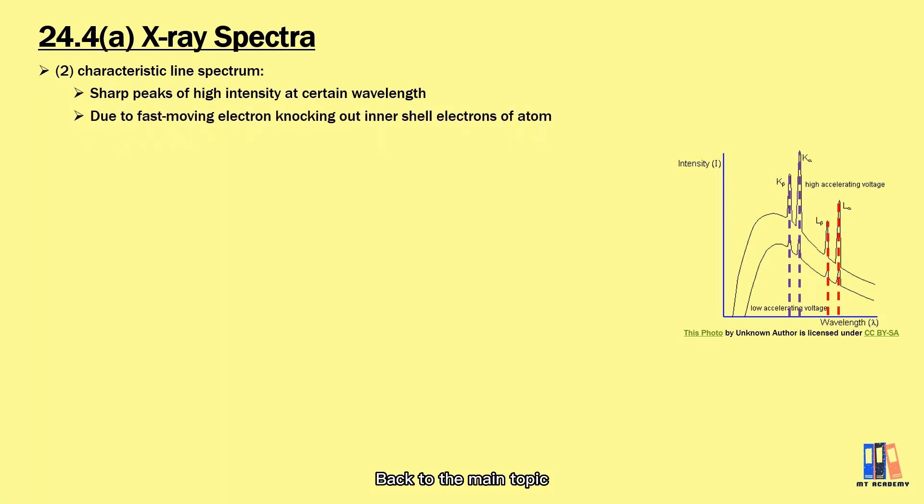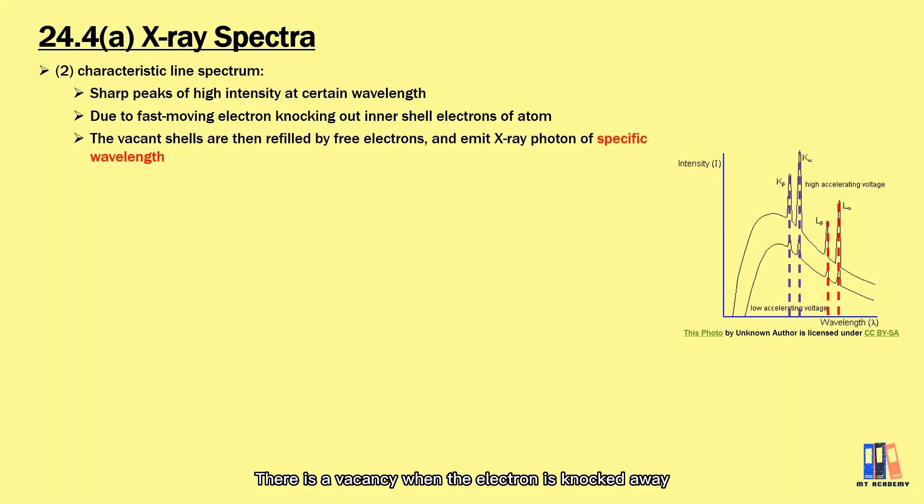Back to the main topic, this wavelength of X-ray is produced starting with the phenomenon where the fast-moving electron will knock out the electron of the inner shell of the atom. There is a vacancy when the electron is knocked away, so the electron from the outer shell fills in the space and emits the photon with specific wavelength. The concept is quite similar to what we have discussed before in the atomic structure.